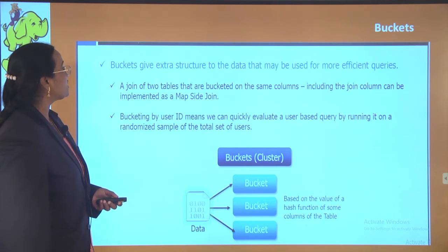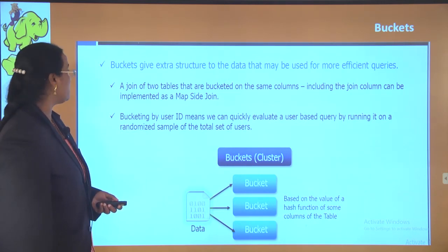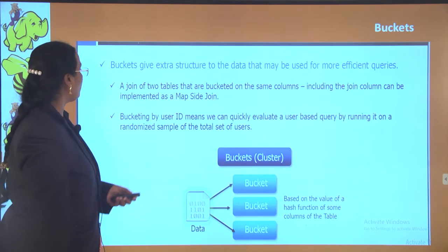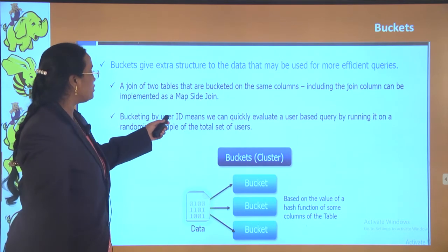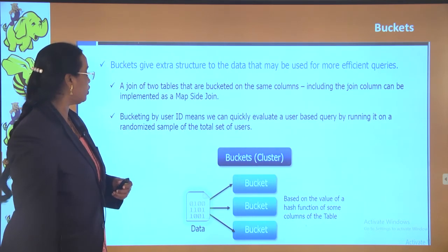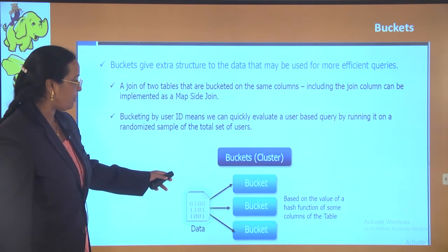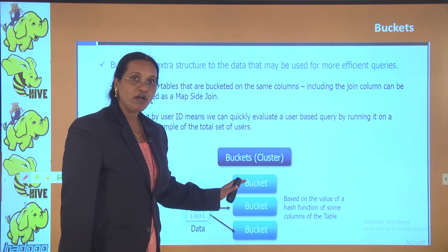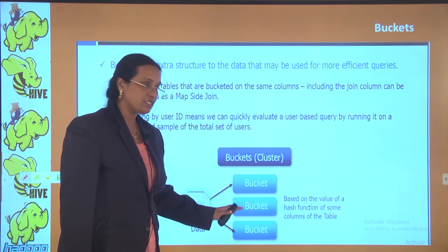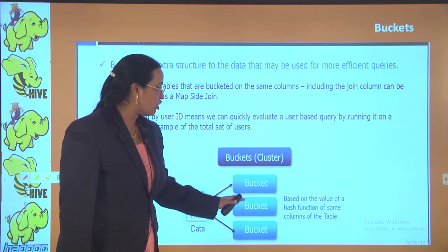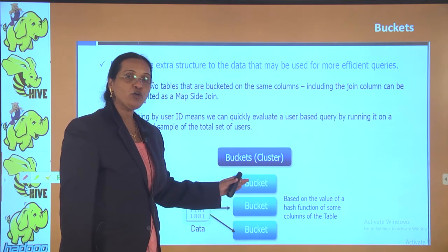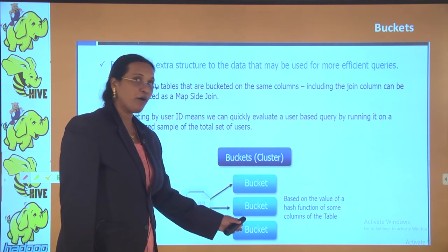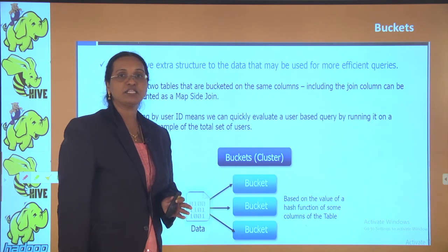Buckets give extra structure to the data that may be used for more efficient queries. A join of two tables bucketed on the same column, including the join column, can be implemented as a map-side join. Bucketing by user ID means we can quickly evaluate user-based queries by running them on a randomized sample of the total set of users. For example, if we have data and buckets — one bucket for apples, one for oranges, and one for guavas — then a query on apples goes to that bucket directly. This is based on a hash function of some columns of the table, making queries faster.